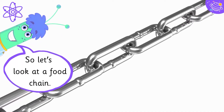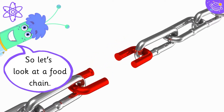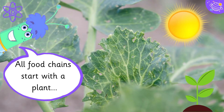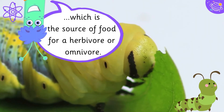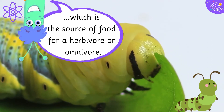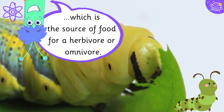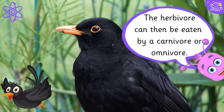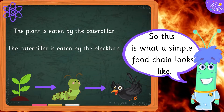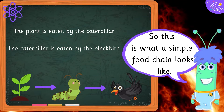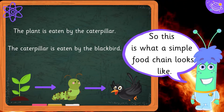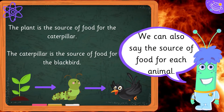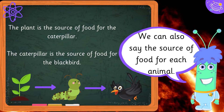So let's look at a food chain. All food chains start with a plant, which is the source of food for a herbivore or omnivore. The herbivore can then be eaten by a carnivore or omnivore. So this is what a simple food chain looks like: the plant is eaten by the caterpillar, and the caterpillar is eaten by the blackbird. We can also say the source of food for each animal — the plant is the source of food for the caterpillar.